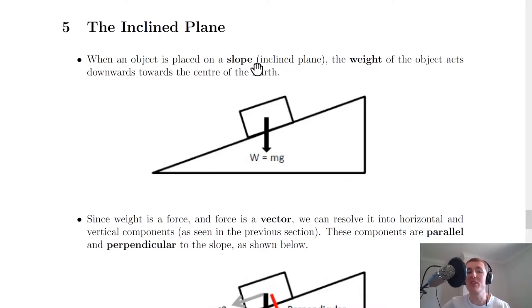When an object is placed on a slope, the inclined plane, the weight of the object acts downwards towards the centre of the earth. Any object has a force acting vertically downward due to gravity, i.e., the weight. The weight is calculated using W = mg. You'll see that we've drawn this force or weight vector acting from the middle of the mass.